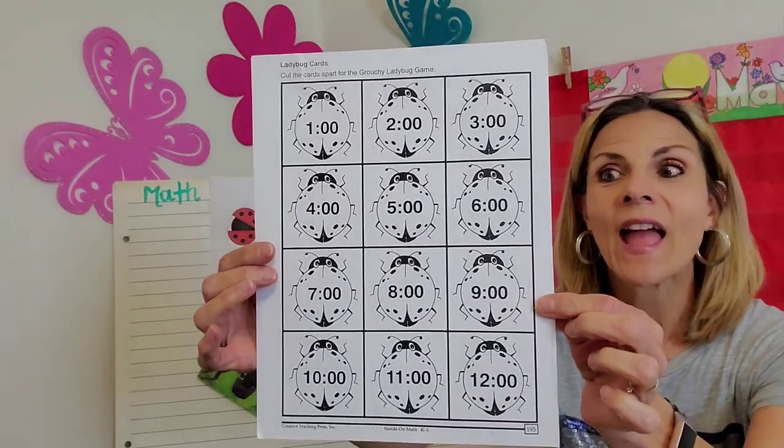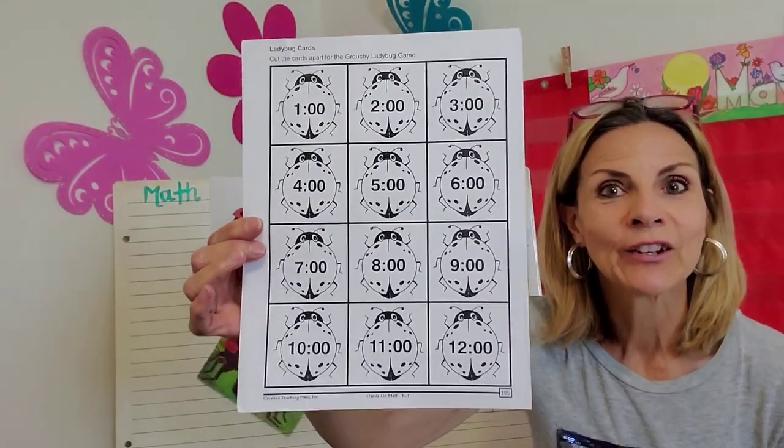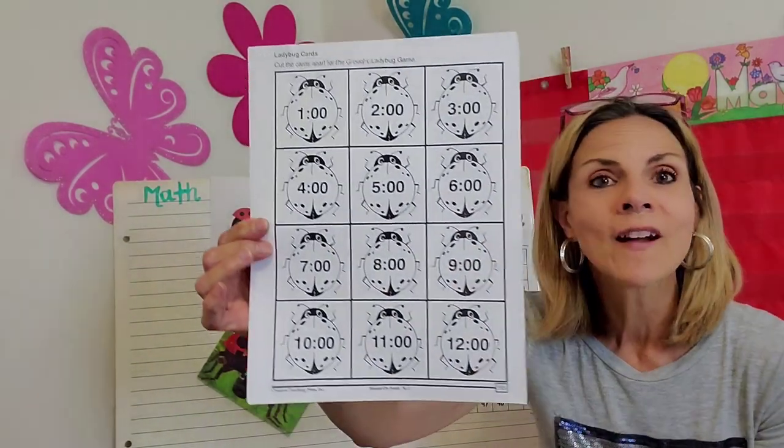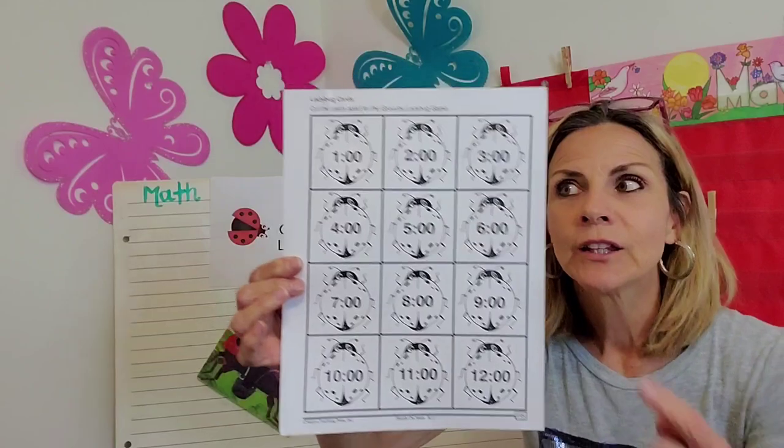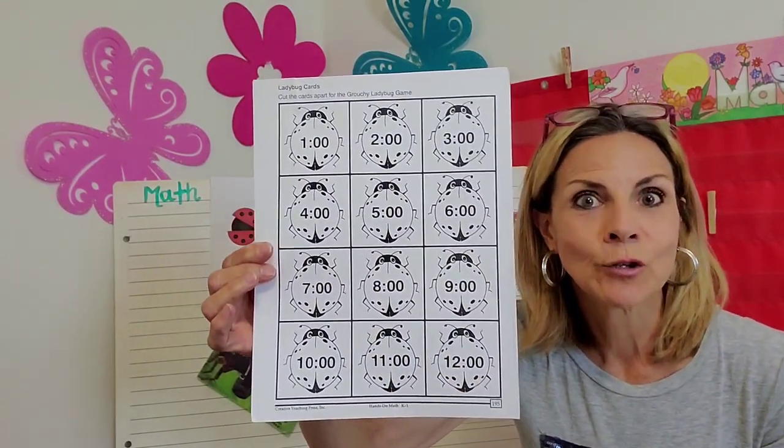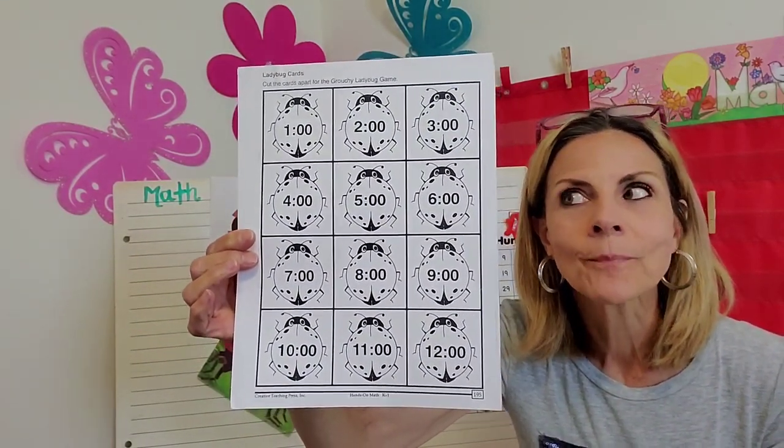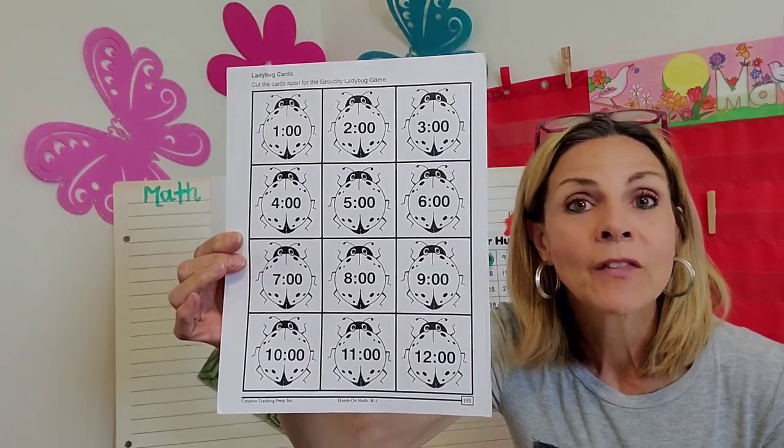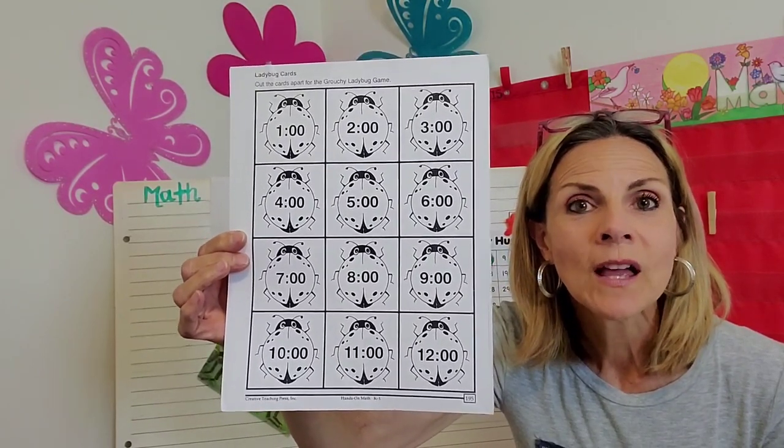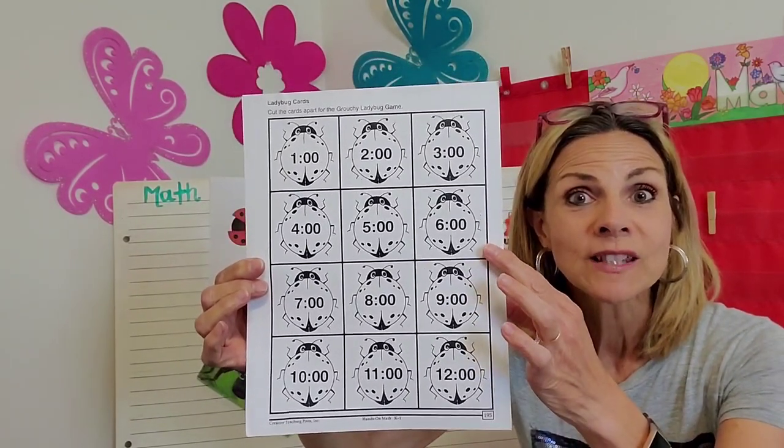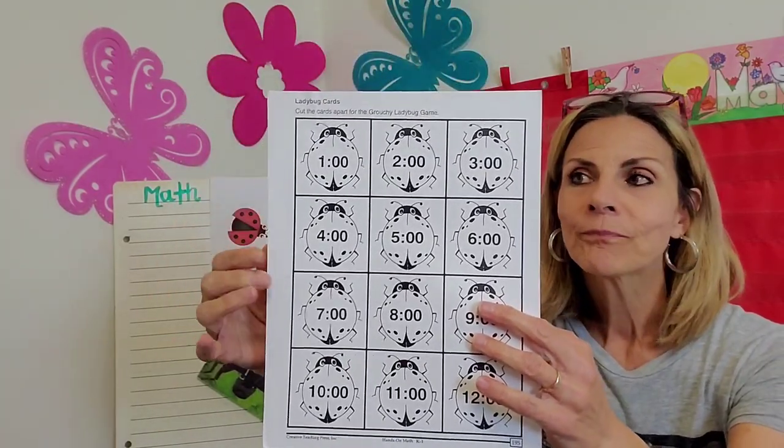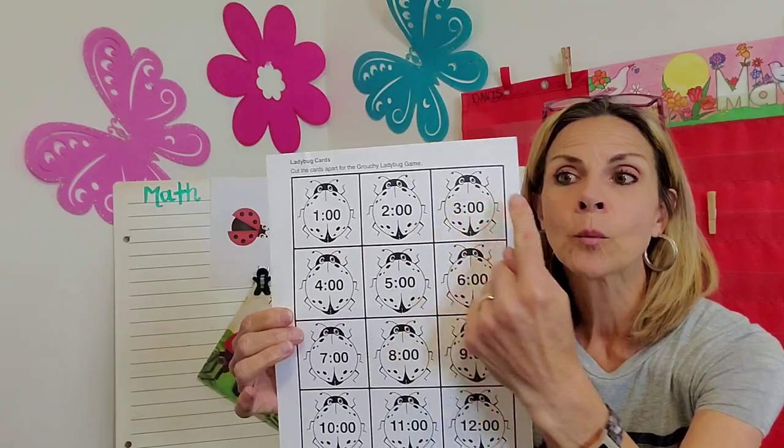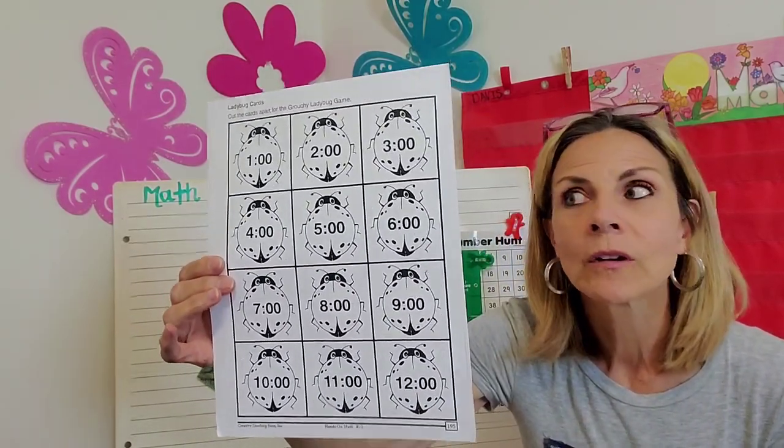You're going to be working on your own, and here's what you're going to do. I have a little skill sheet here. It contains 12 ladybugs. In each ladybug, you can spy digital time. Time on the hour. What I want you to do, the first thing I want you to do to practice those time on the hour skills is I want you to go in order.